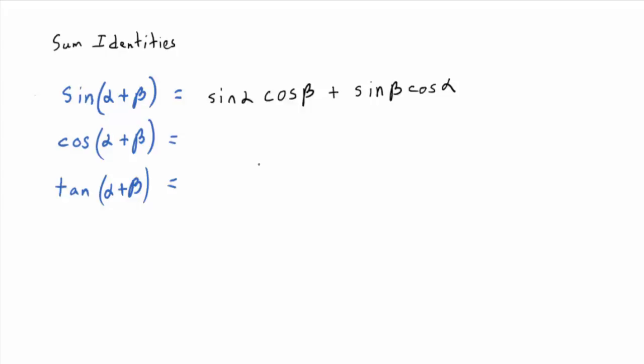The cosine of alpha plus beta goes cosine, cosine, sine, sine, with a minus in between. So it's cosine alpha cosine beta minus sine alpha sine beta. When it's a plus — cosine of alpha plus beta — on the right side it's actually a minus.